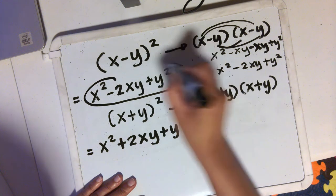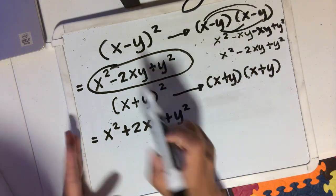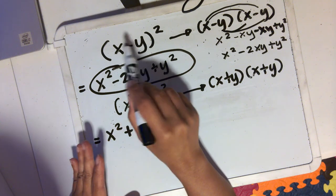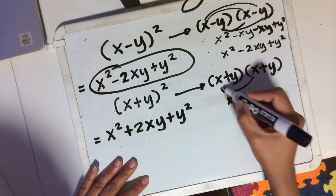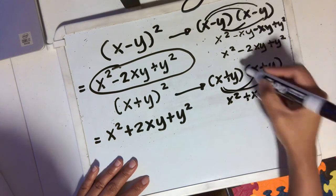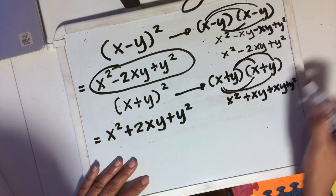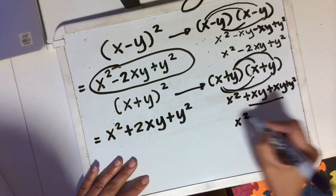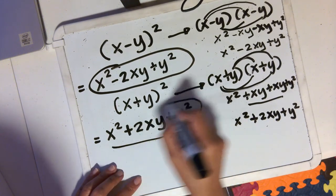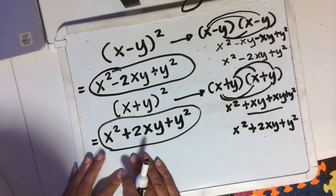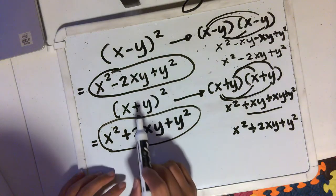Therefore this is correct. So you can use this as a formula for squaring a binomial if the operation between the two terms in the binomial is subtraction. Now let's double check the plus case. x times x is x squared. x times y is positive xy. y times x is again positive xy. And y times y is y squared. Combining these two like terms, you'll have x squared plus 2xy plus y squared. So that means this is correct too — you can use this as a formula when the operation between the two terms in the binomial is a plus.